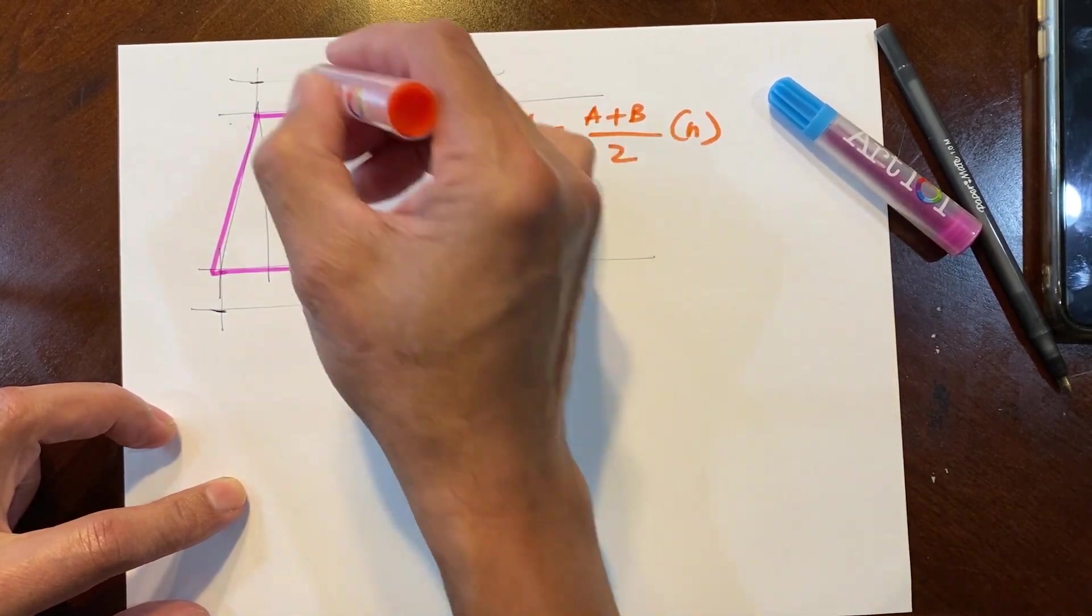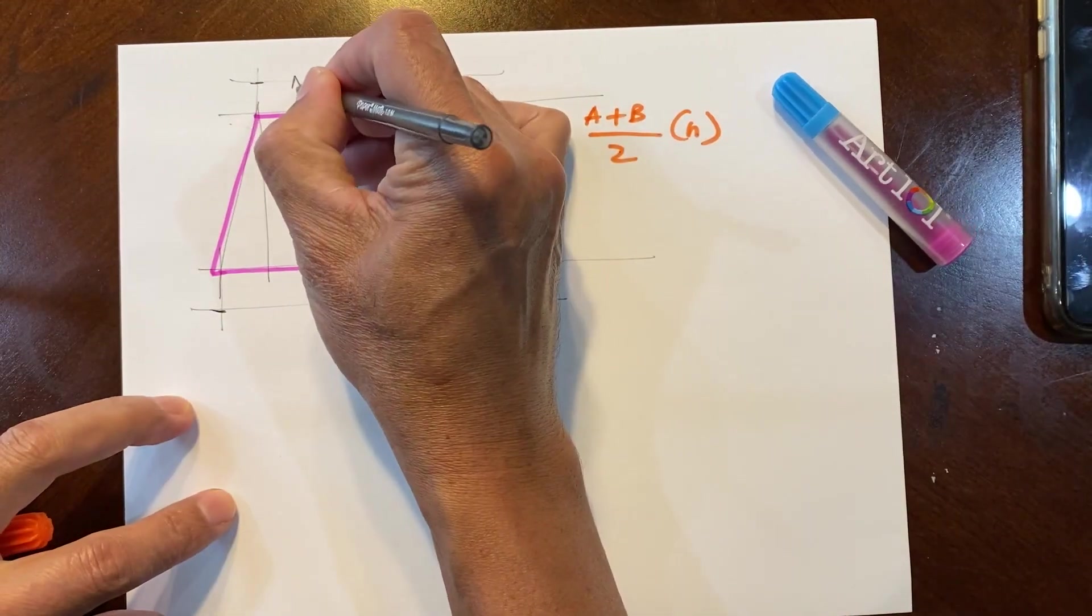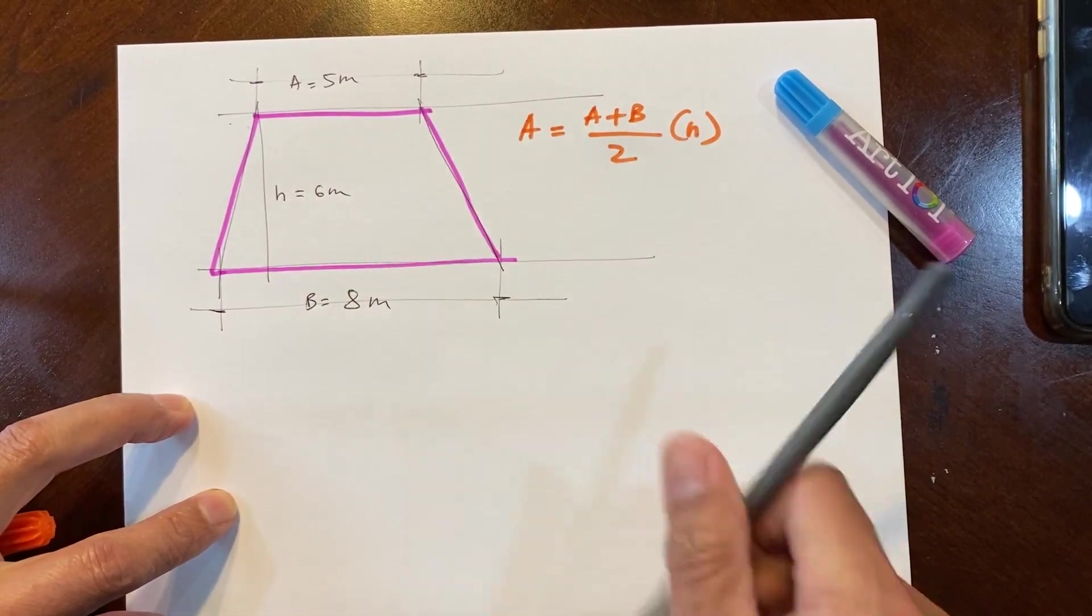This is A and this is B, the parallel sides A and B.